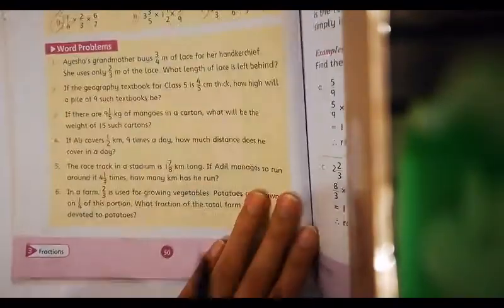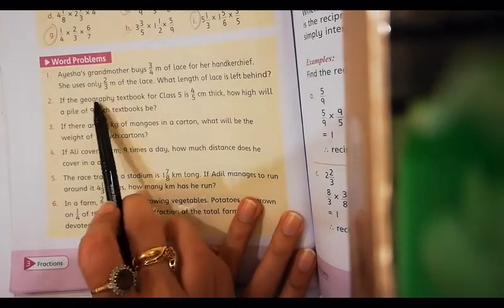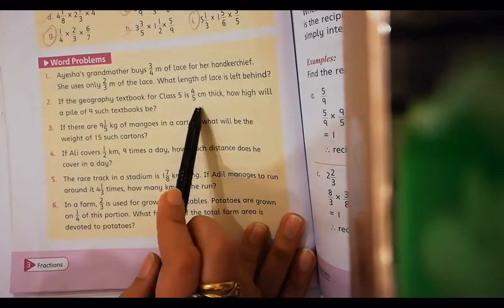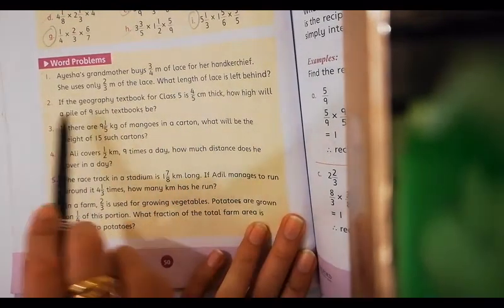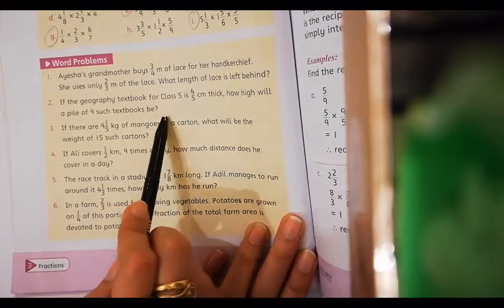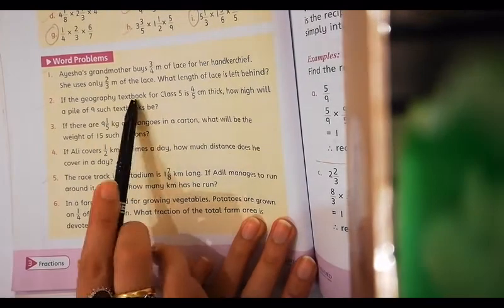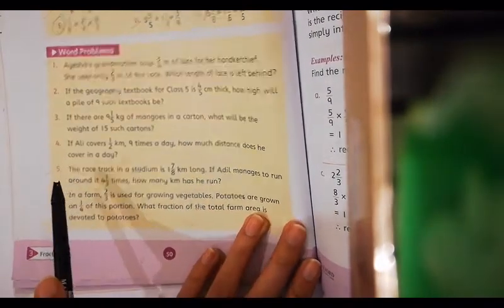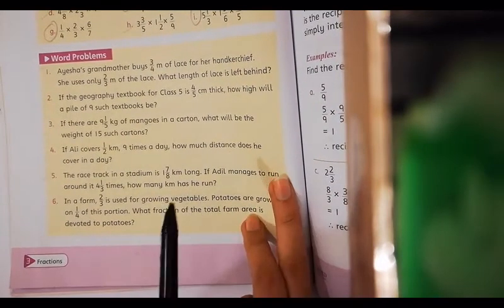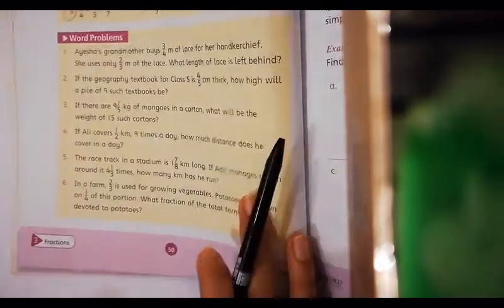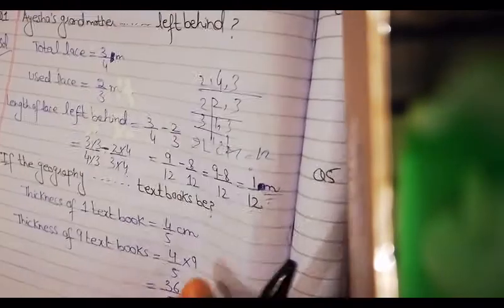Question number 2: if the geography textbook for class 5 is 4/5 cm, how high will a pile of 9 such textbooks be? I have a geography textbook for class 5, its thickness is 4/5 cm. I have to find out total thickness of 9 such textbooks. So what do you need to do? Simply multiply both of them.